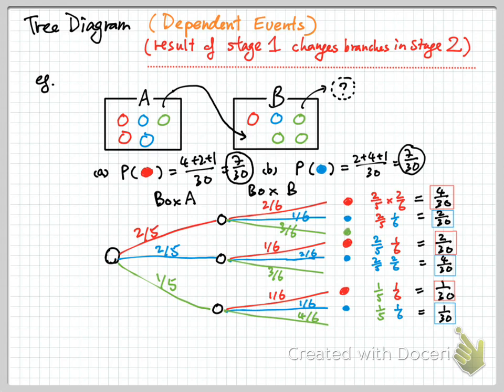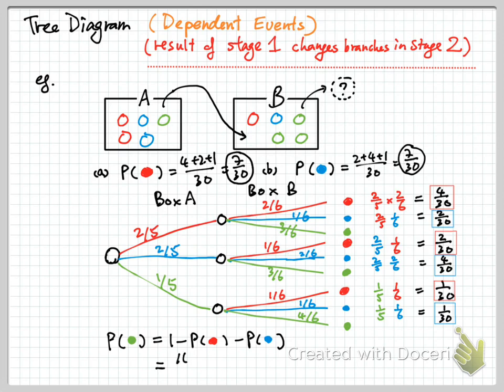By similar token, you can also calculate the probability of getting a green. You can get the green by repeating the same thing, or you can use 1 minus — because it is either green, red, or blue. So the probability of green is 1 minus red minus blue. If it is not red and not blue, it must be green. So the probability of getting a green will be 16 over 30, which simplifies to 8 out of 15.